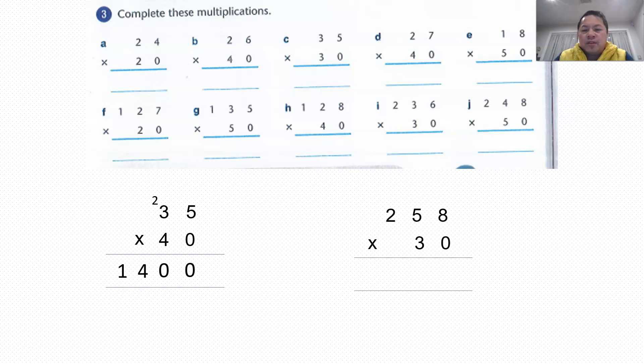258 times 30. So since it's a multiple of 10, again, I put a 0 there. 8 times 3 is 24. And 5 times 3 is 15. 15 plus 2 is 17. So 2 times 3 is 6. 6 plus 1 is 7. So it's 7740. Okay, complete the rest on your own. I'm sure most of you will not have any issue with this. Just have to be very careful.